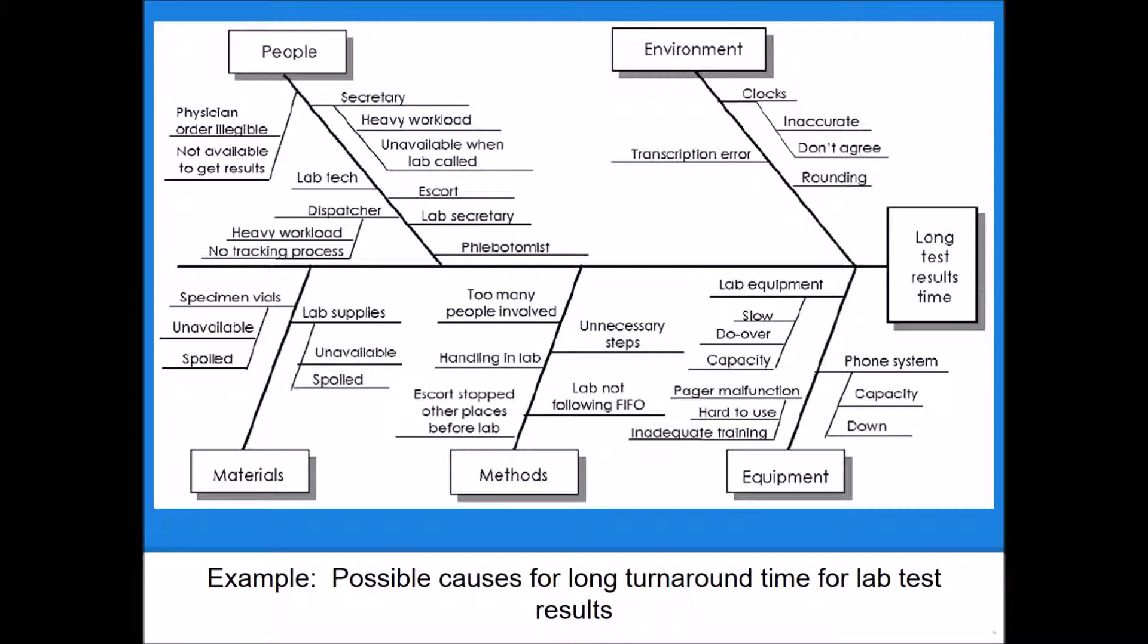Here's an example of a basic fishbone diagram. It's called a fishbone because it looks kind of like a fish. It has a head, a main backbone, some side bones, and then some smaller bones.